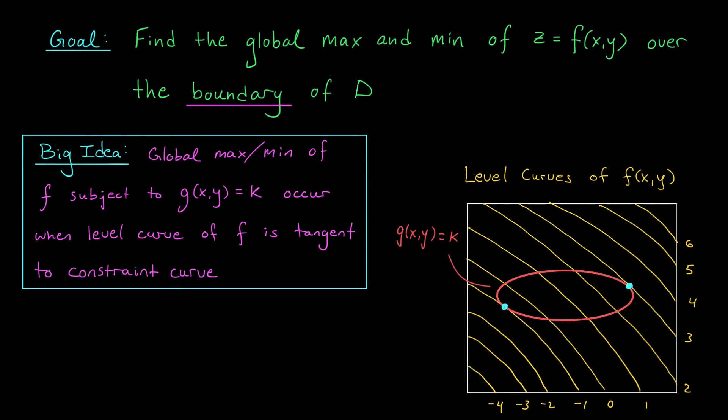It turns out the answer to this question comes from our knowledge of gradient vectors. Remember, the gradient vectors of the function f(x,y) are always going to point us in the direction of steepest ascent. You can see from these level curves that my function is increasing as we move this way.